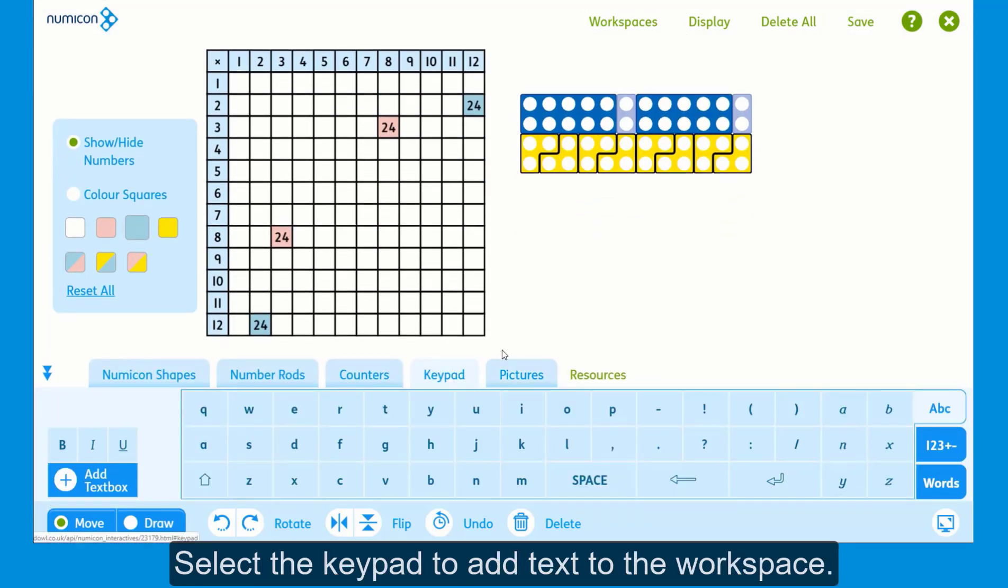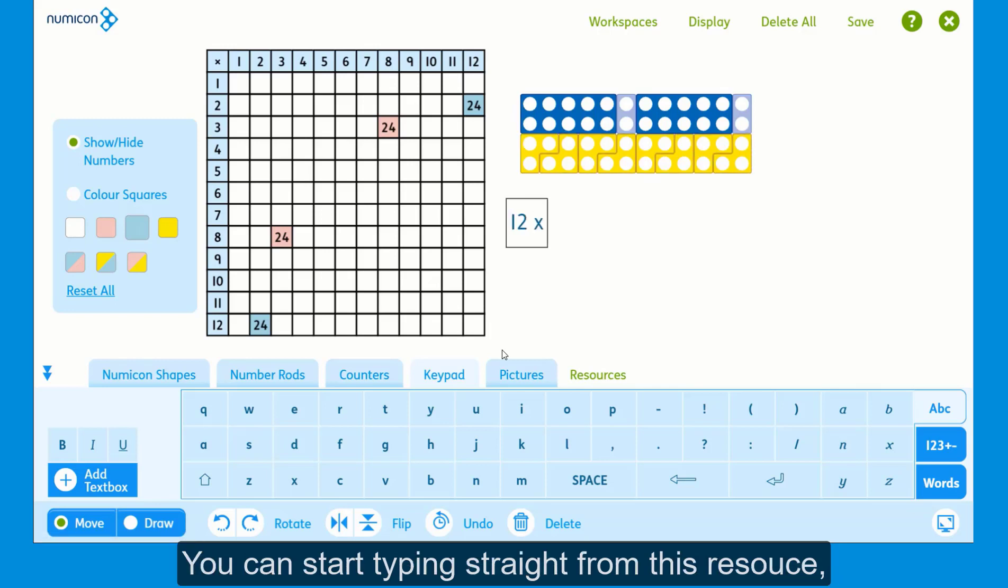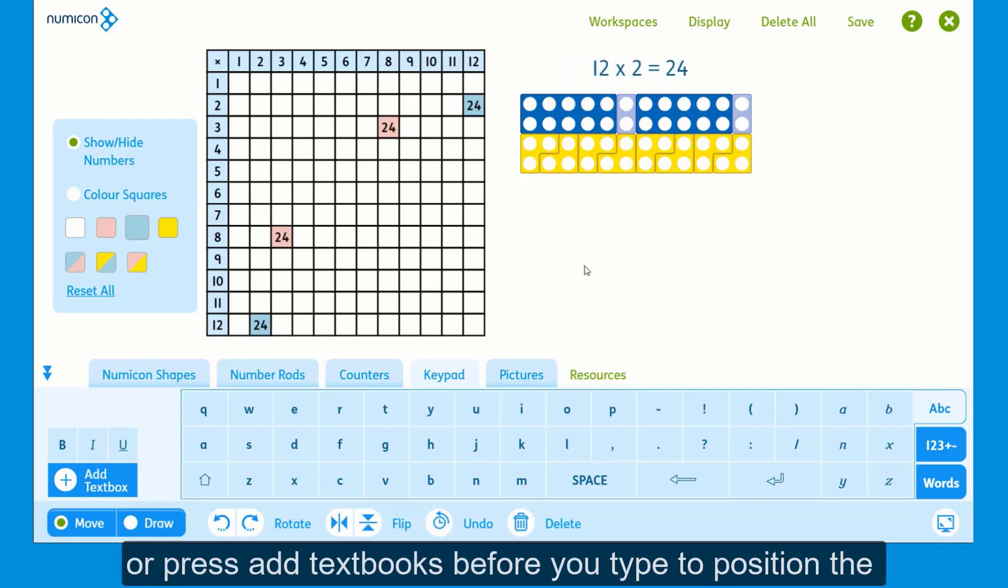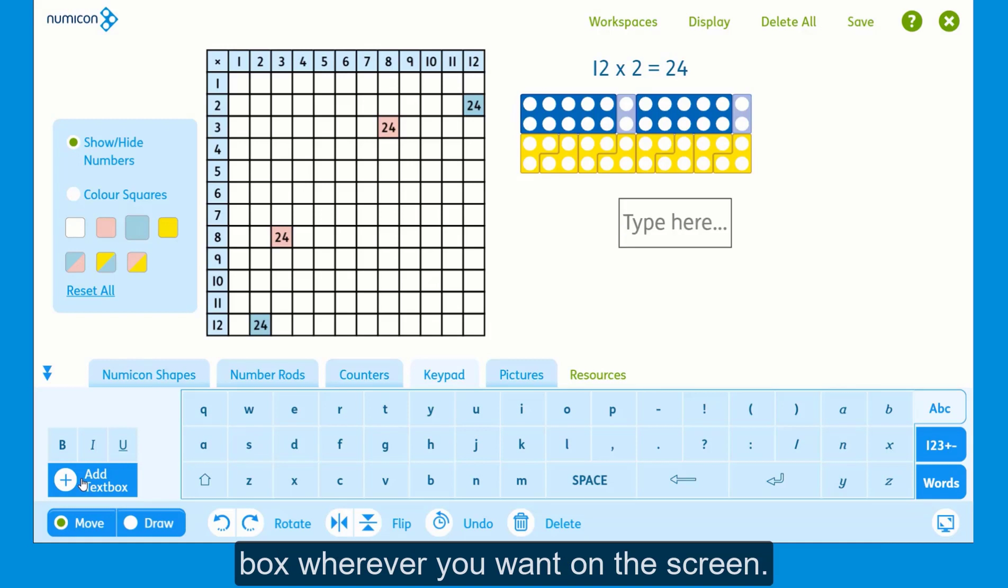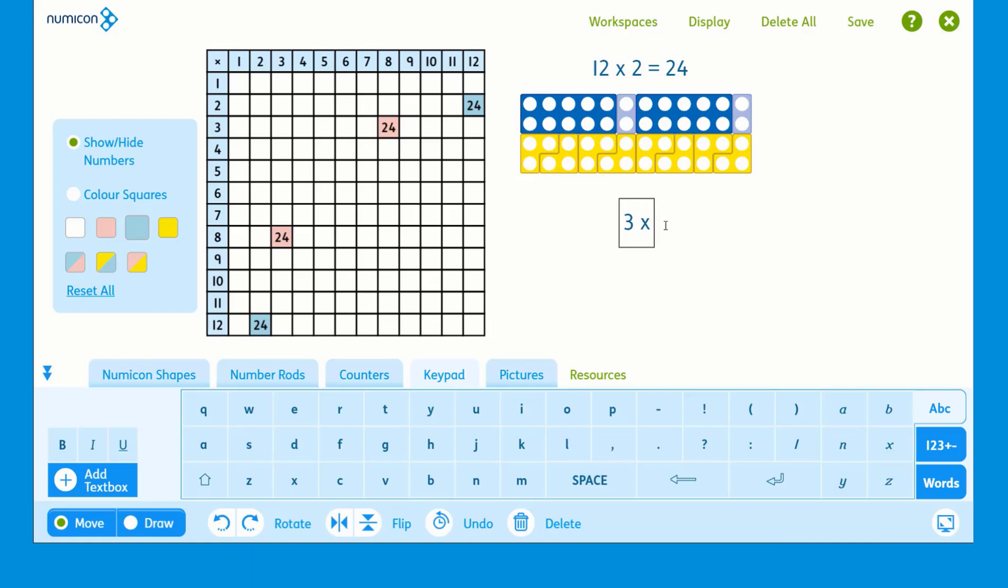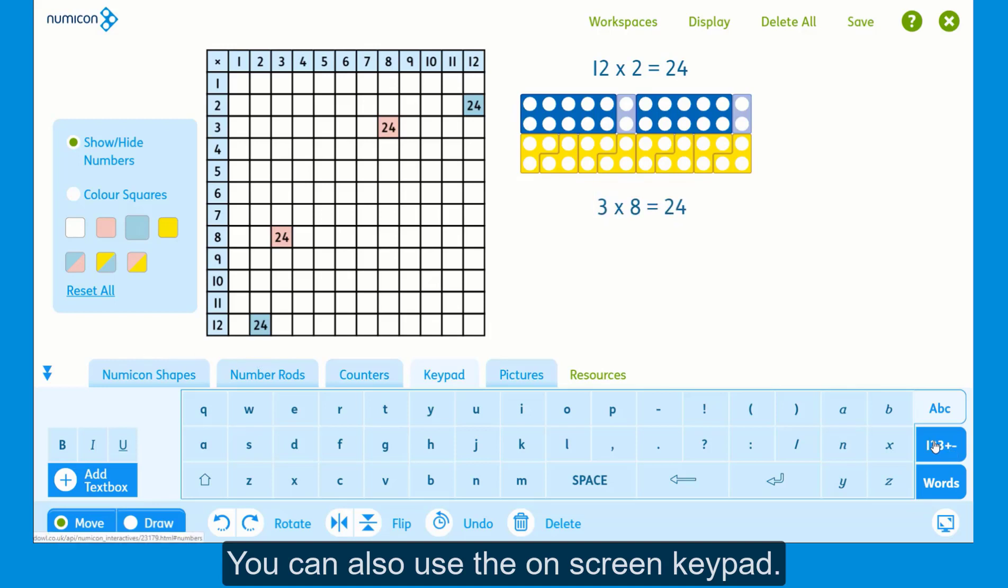Select the keypad to add text to the workspace. You can start typing straight from this resource. Or press add text box before you type to position the box wherever you want on screen. You can also type using the on-screen keypad.